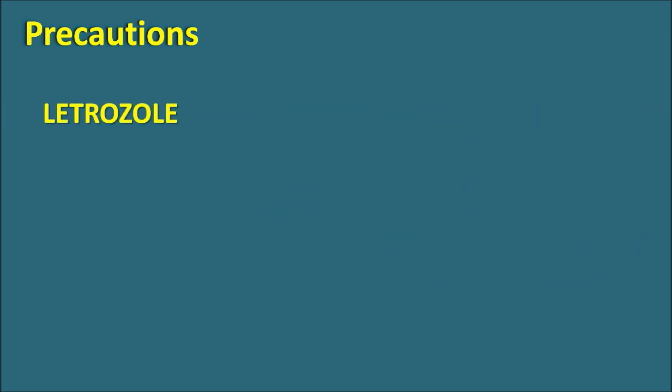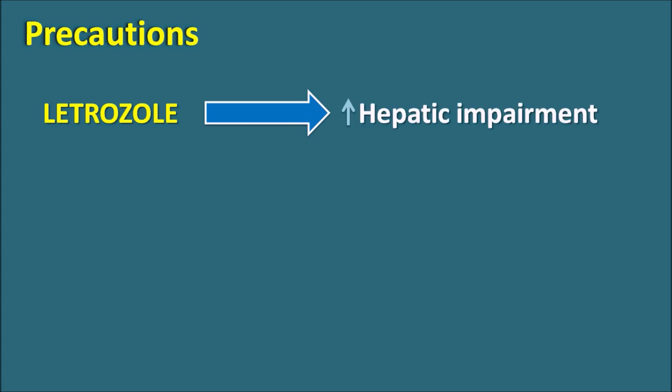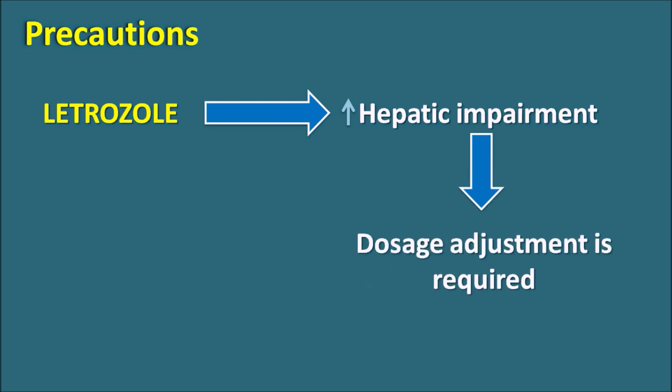A third important precaution is that Letrozole can increase hepatic impairment. If a patient is already having hepatic impairment or liver cirrhosis, Letrozole can further worsen it. In those patients, the dose should be adjusted so that Letrozole will not produce toxicity. These are the three important precautions to be taken before giving Letrozole to patients.